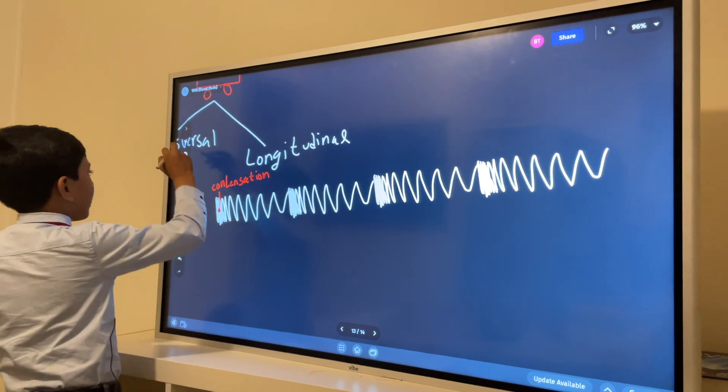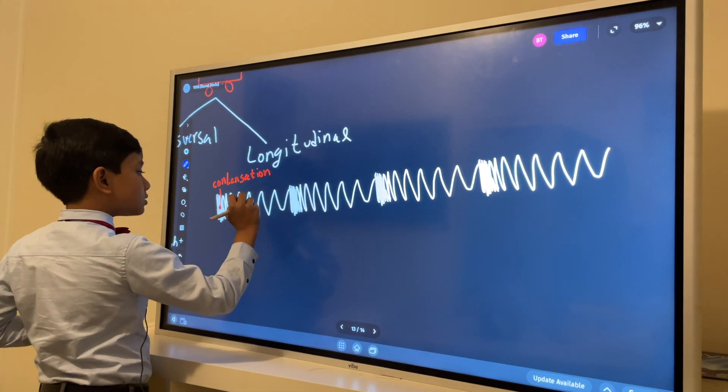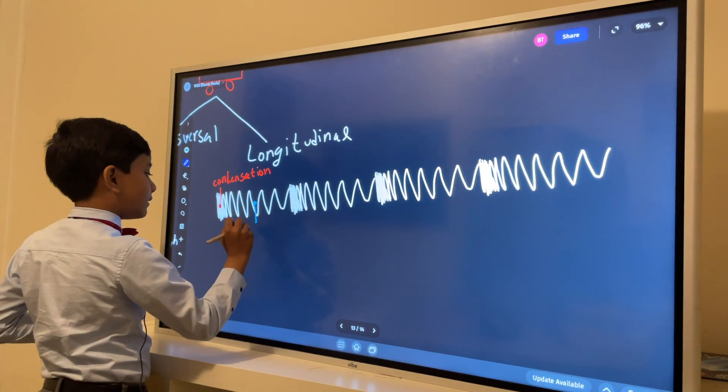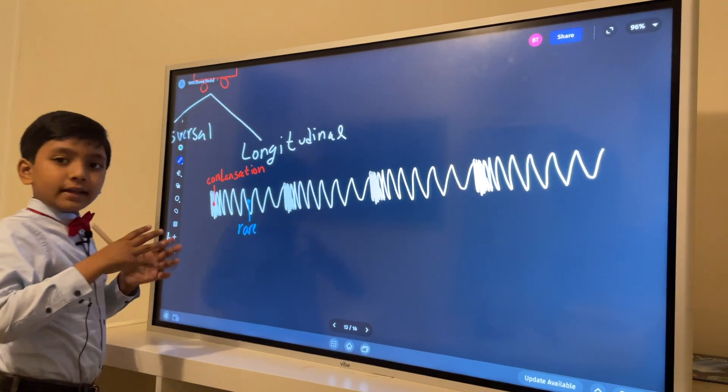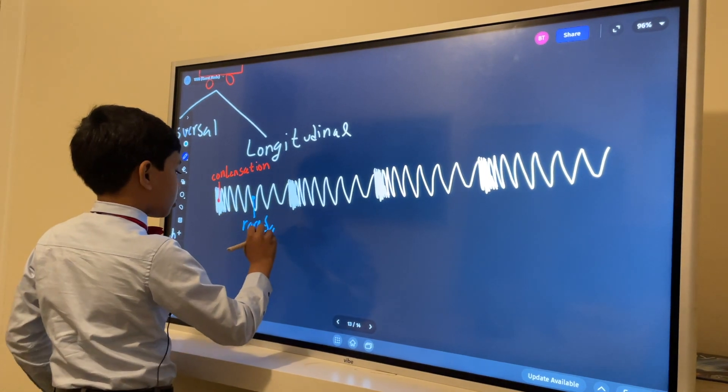And then you have this. That's called rarefaction, where it just spreads out. It expands. They get further away.